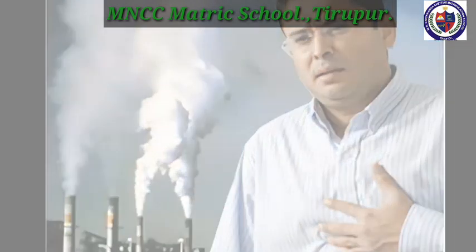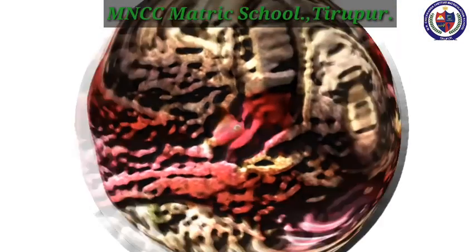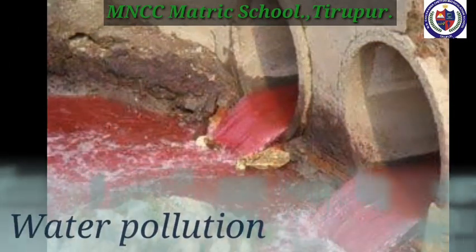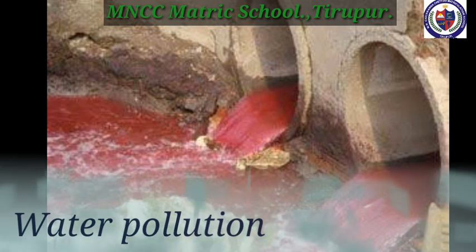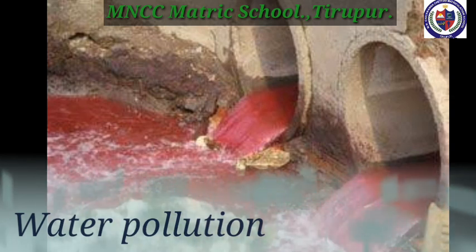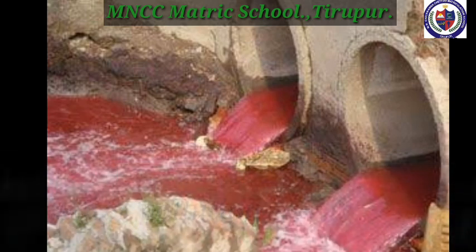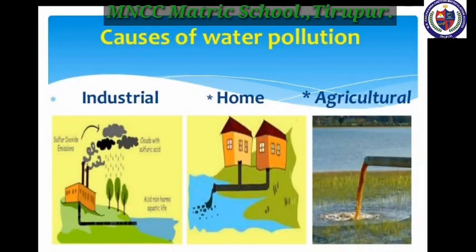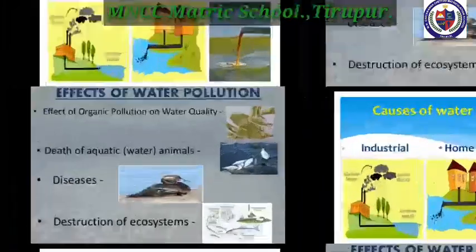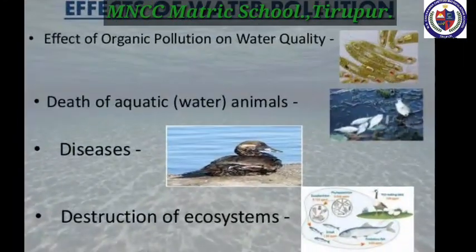The next one is water pollution. Chemical substances responsible for water pollution include dyeing industries, detergents, oil spillage, etc. Effects of water pollution include effect on organic water quality, death of aquatic animals, diseases, and destruction of ecosystems.